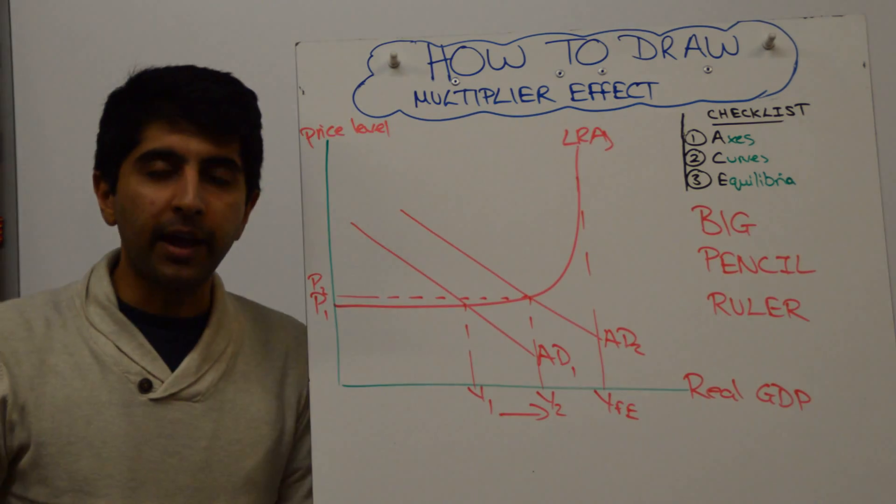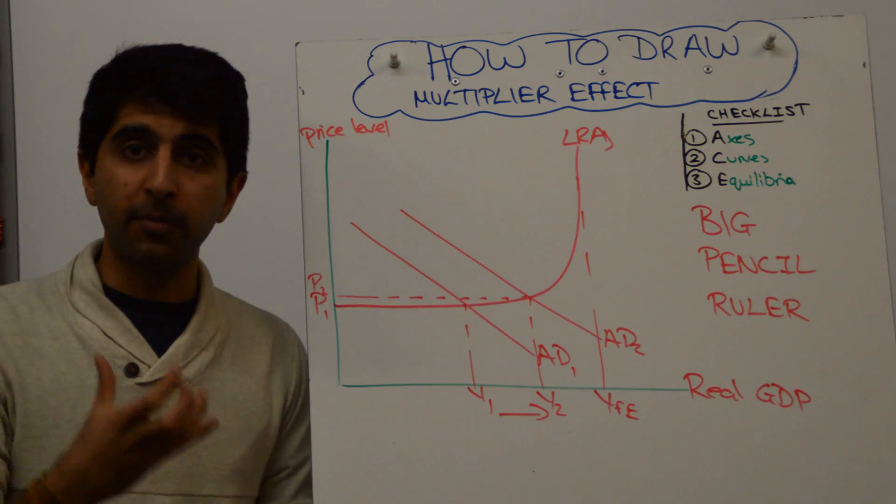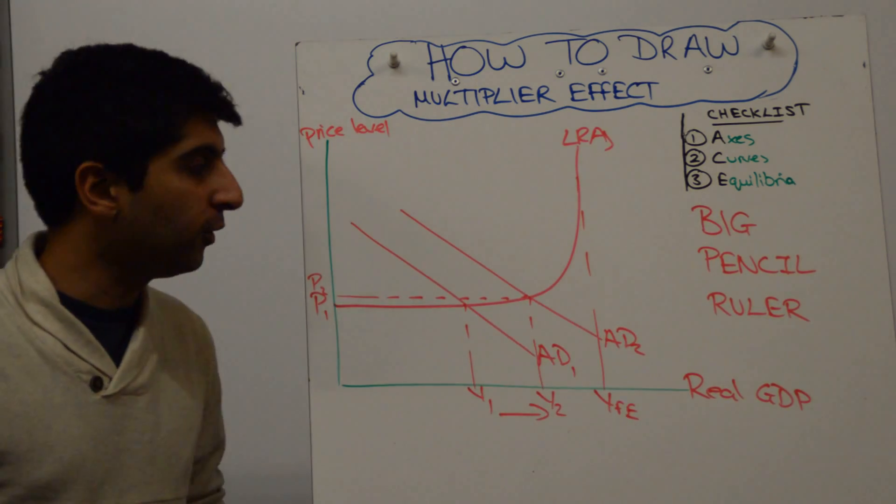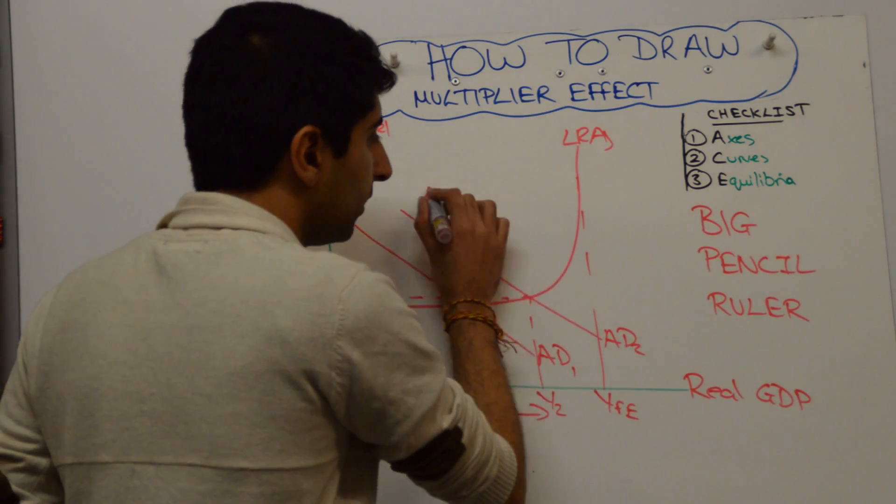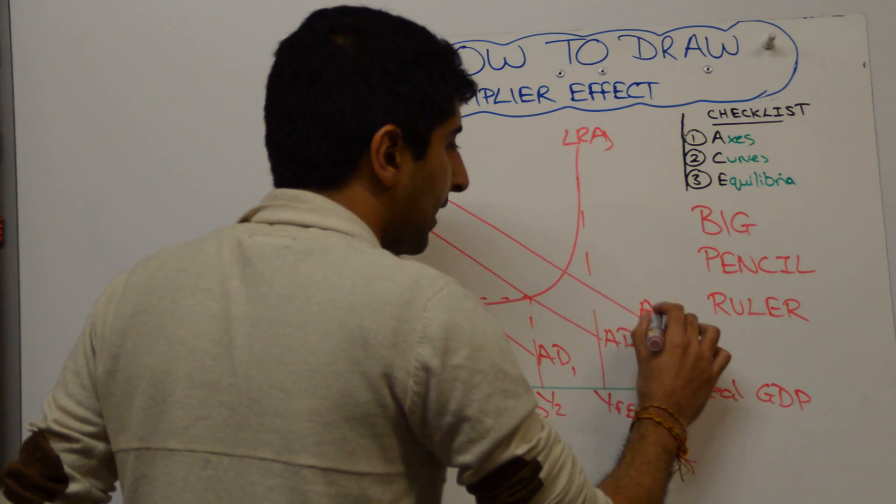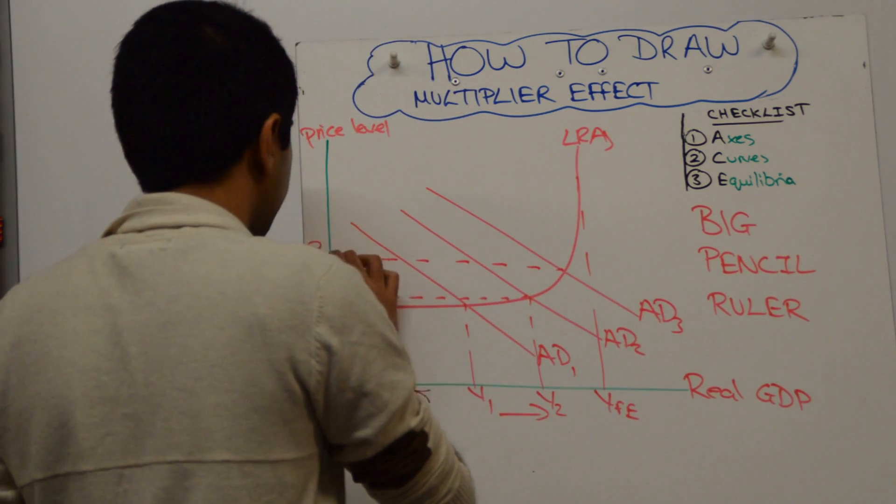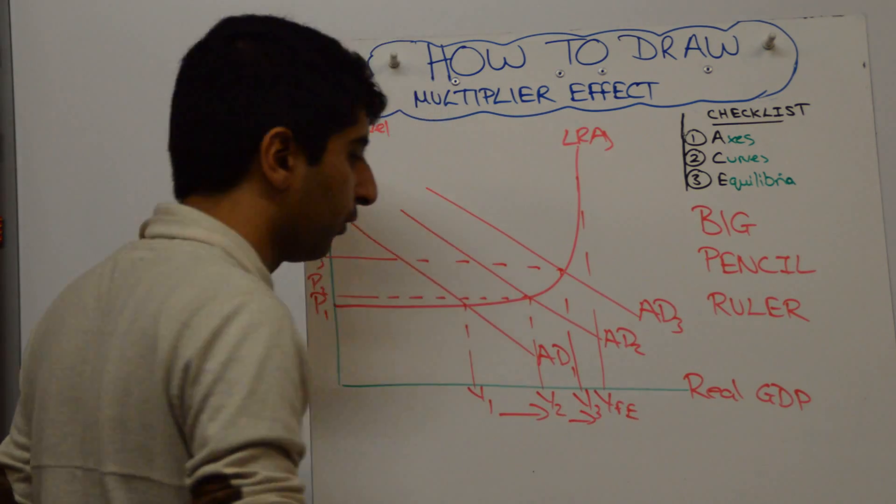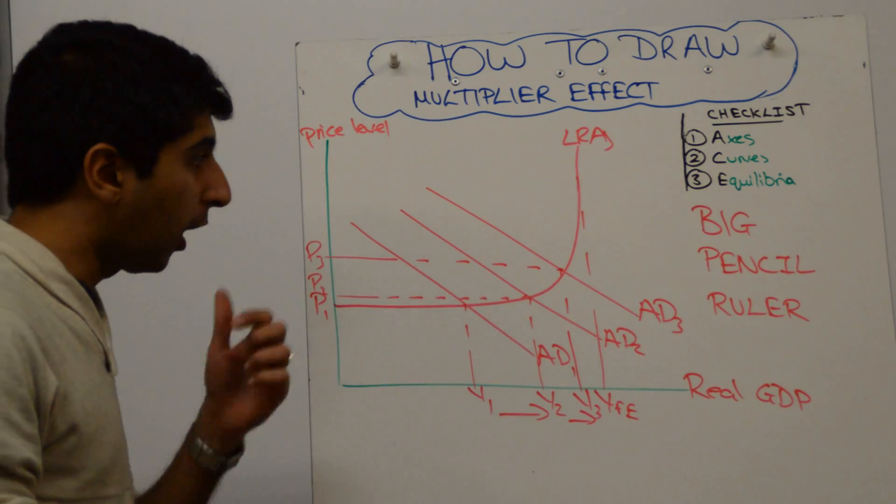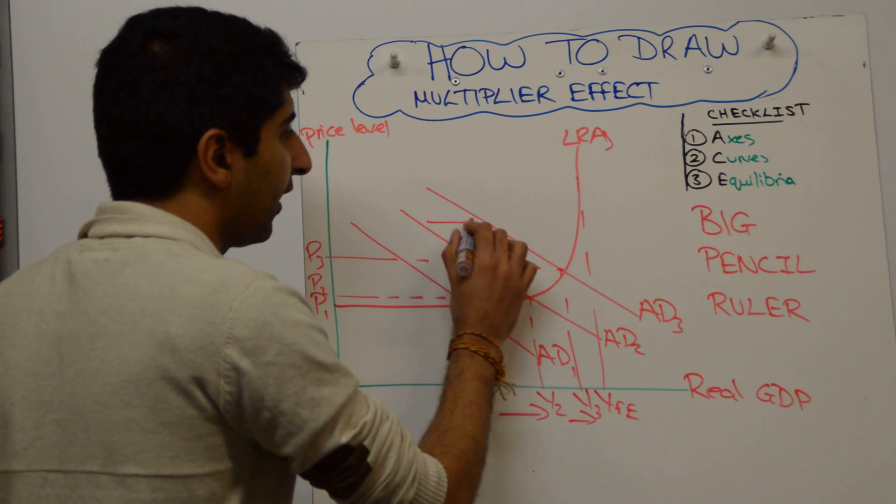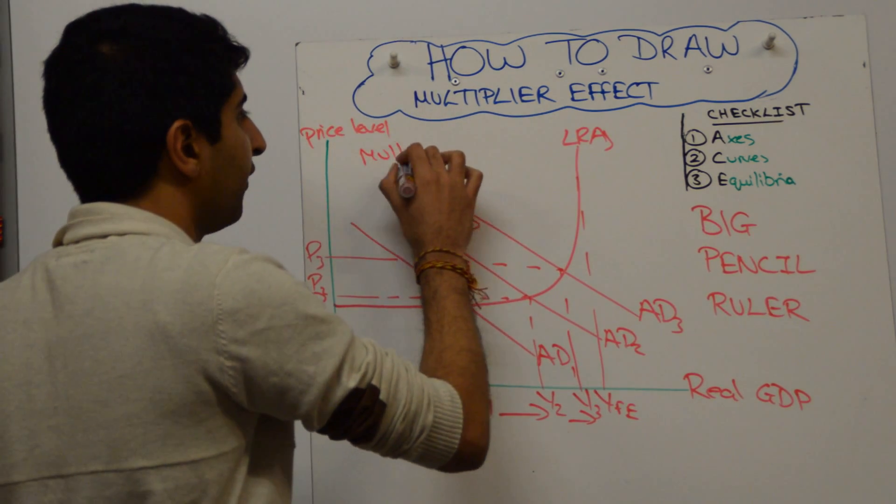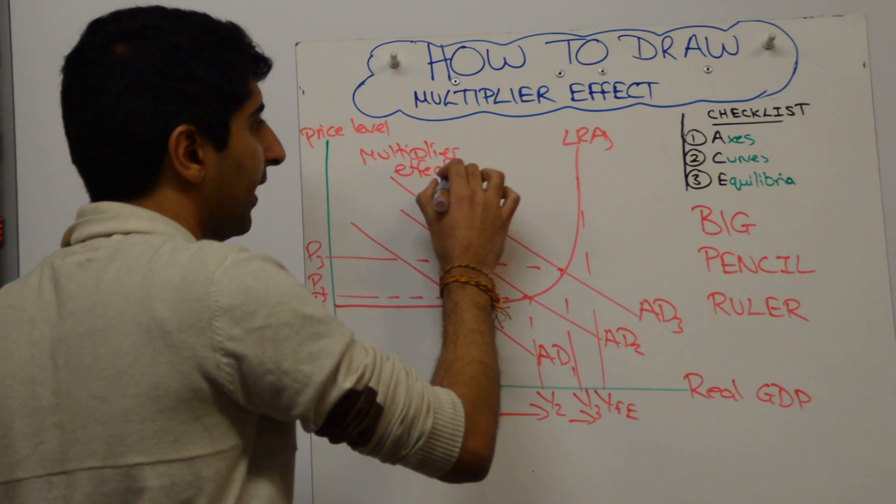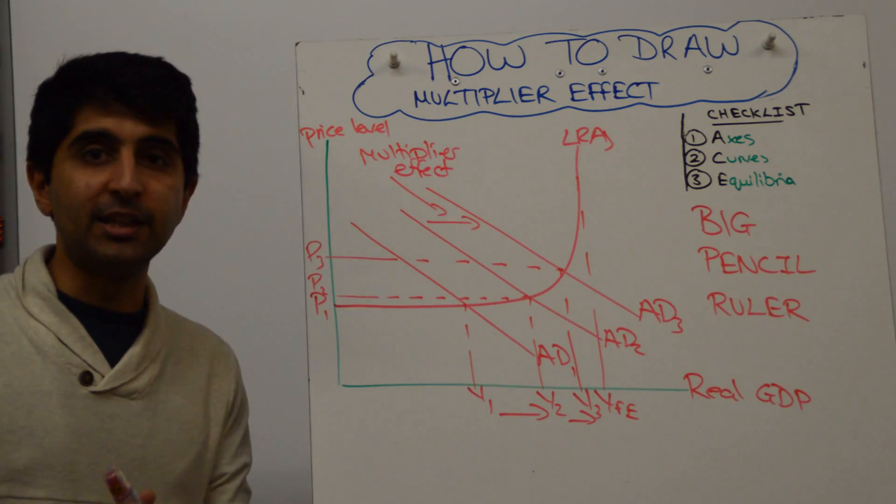But your multiplier is the extra increase in growth that comes from this initial increase in spending. So aggregate demand doesn't just stop at AD2, it keeps going to AD3 with a higher price level of P3 and an even higher level of actual growth to Y3. And what I would say is, look, that shift there is the multiplier effect. So I would label that as the multiplier effect, that second shift from AD2 to AD3.